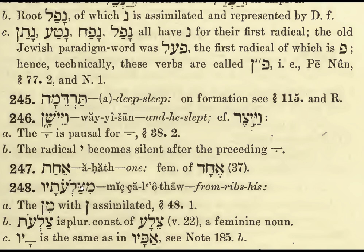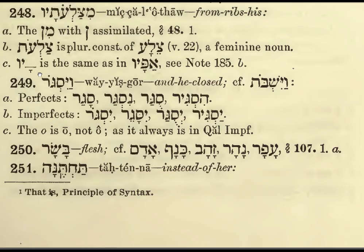Min here is assimilated, giving us a double consonant. Tzalgot is the plural construct of Tzela, a feminine noun. The possessive ending AV is the same as in Appav, 'his nostrils,' which we saw before. Vayyisgor — 'and he closed.' Compare with Vayyisbot. Examples of the root Sagar: Nisgar, Sugar. Hifil imperfect: Yisgor, Yissagir, Yissugar, Yasgir.